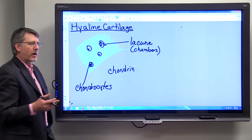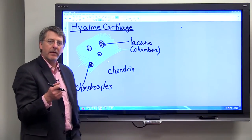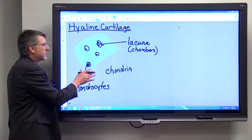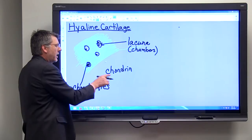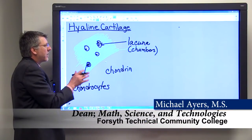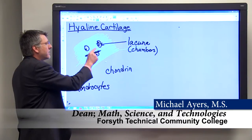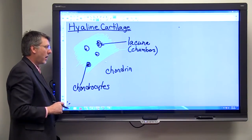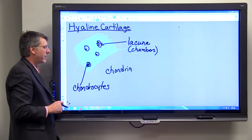So hyaline cartilage is a tough yet flexible tissue that has a semi-solid ground substance made out of chondrin. And within the chondrin, within that ground substance, are chambers called lacuna. And the cells, called chondrocytes, are found within the chambers.